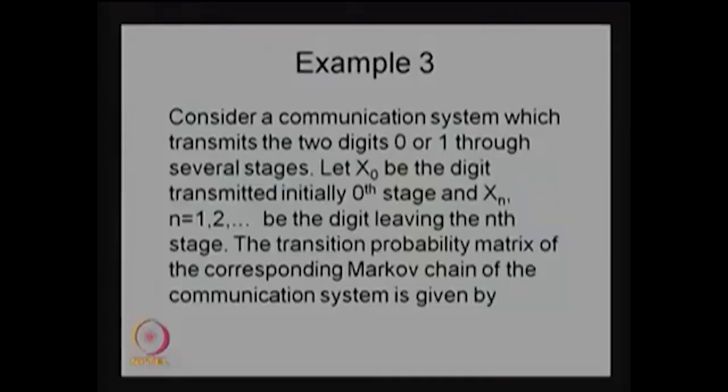The way subsequent transmission takes place depends only on the last transmission, not the previous stages. Therefore we can assume this follows the Markov property, and this stochastic process is called a discrete time Markov chain.